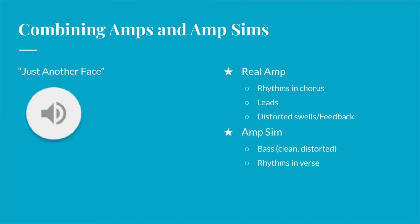With a better understanding of the pros and cons of using both amps and amp sims in the tracking and mixing process, let's look at an example where I combine these techniques. In this clip, you will hear that the rhythm guitars in the chorus, the lead guitars, and the distortion swells and feedback were all recorded with real amps, while the two parallel bass tracks, both clean and distorted, and the rhythm guitars in the verse were processed through an amp simulator.